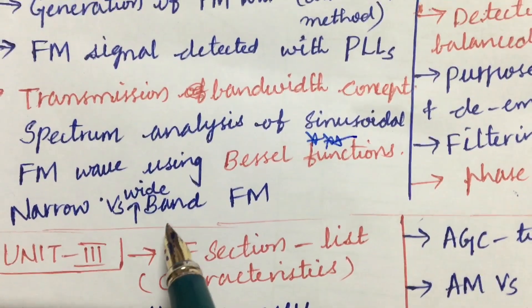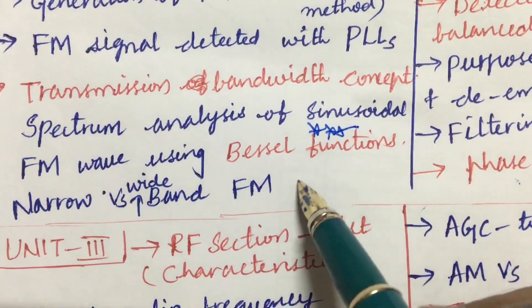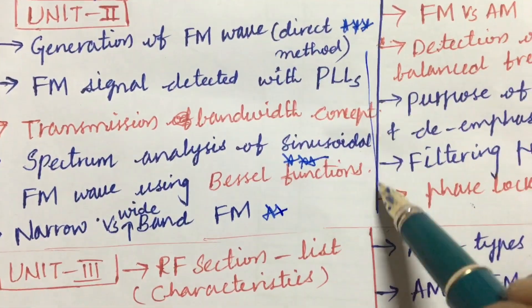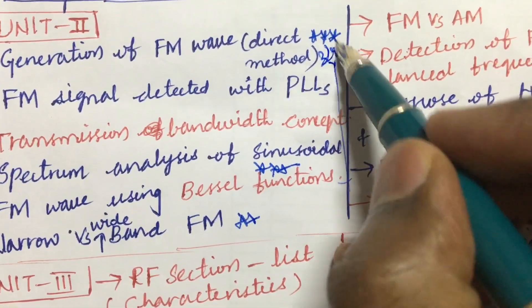And the narrow band FM versus wideband FM differences may be also asked. From this part we can expect 3A as well as 3B.